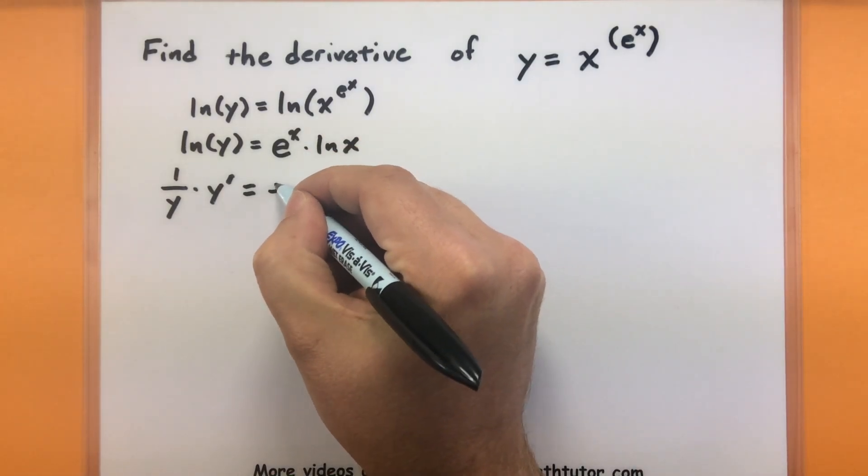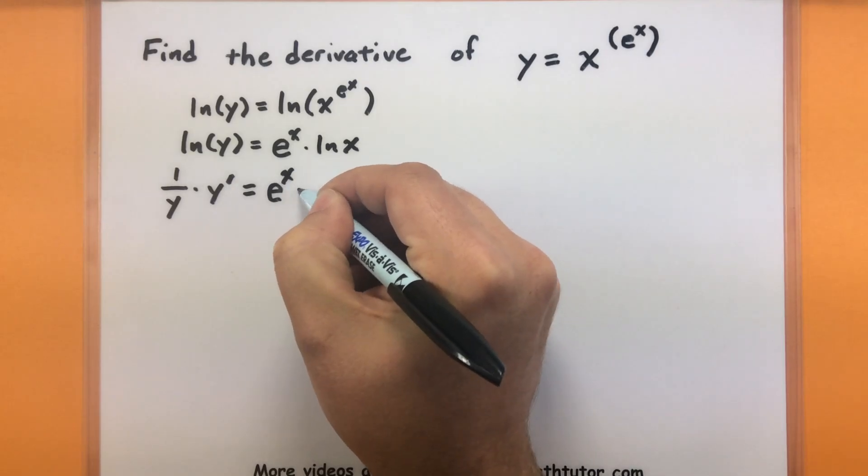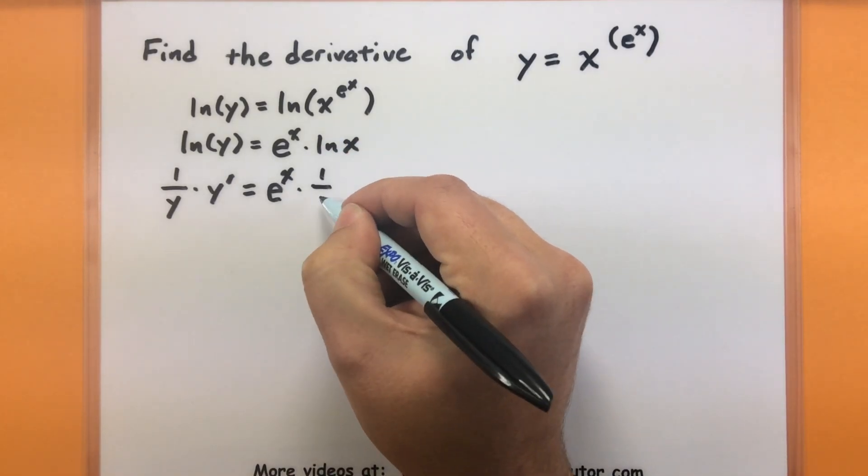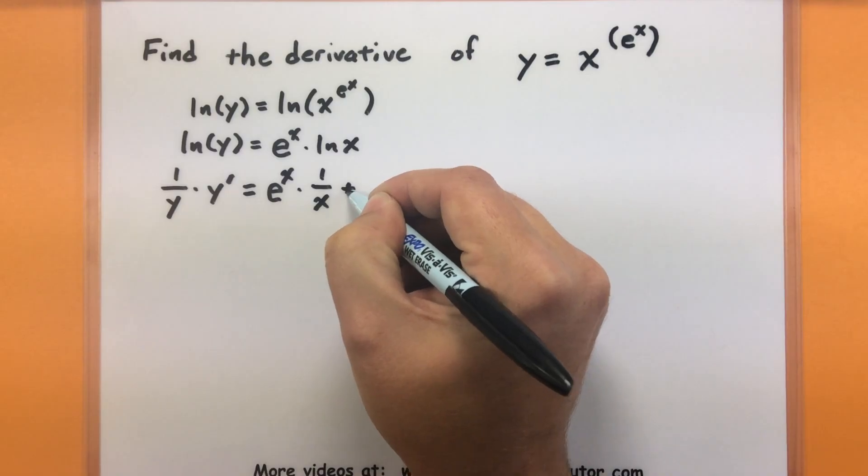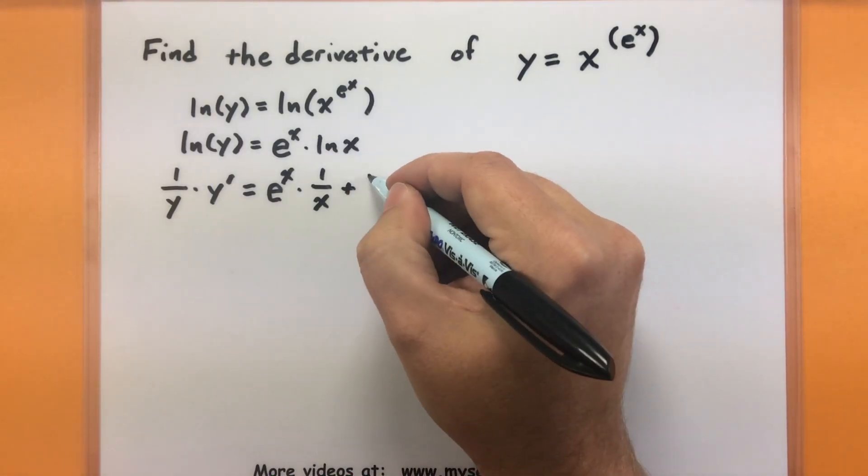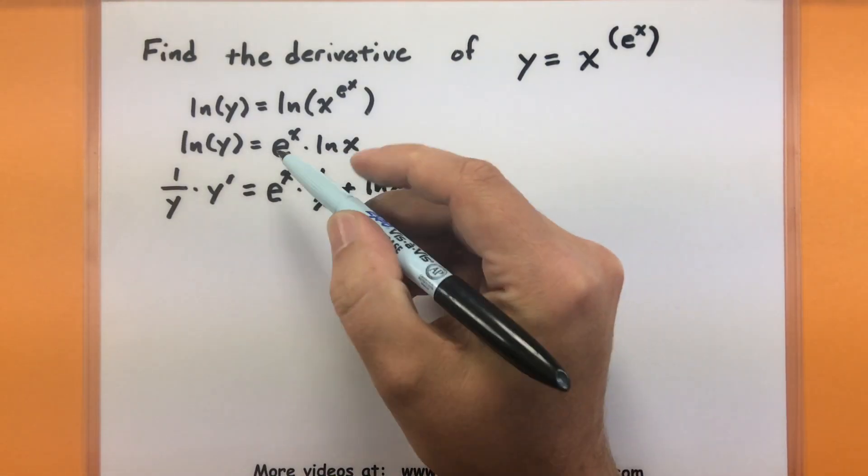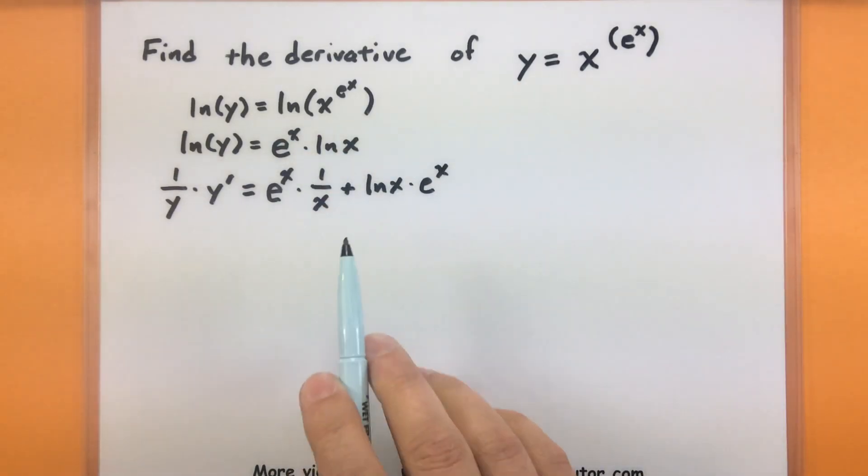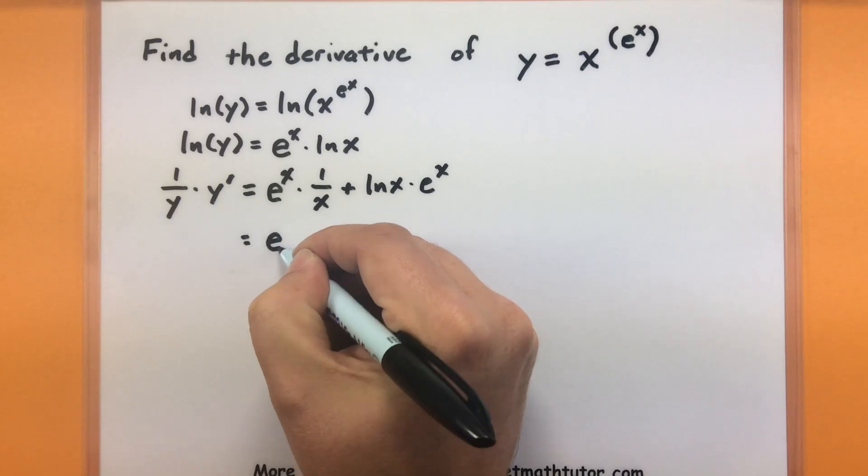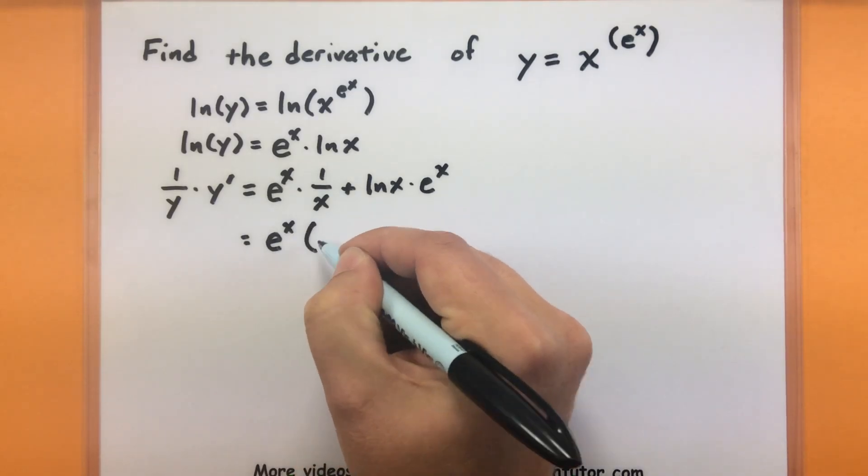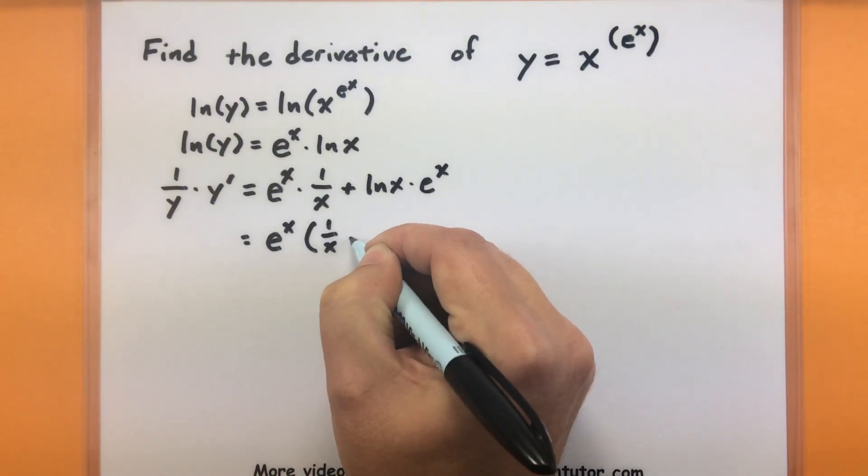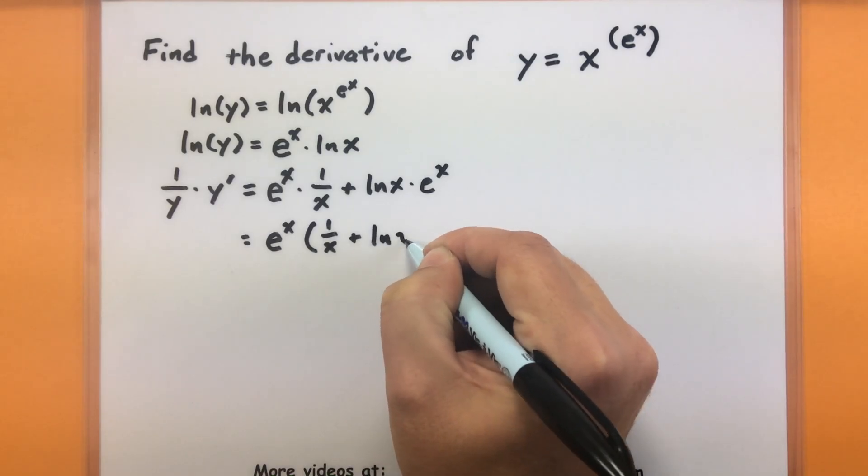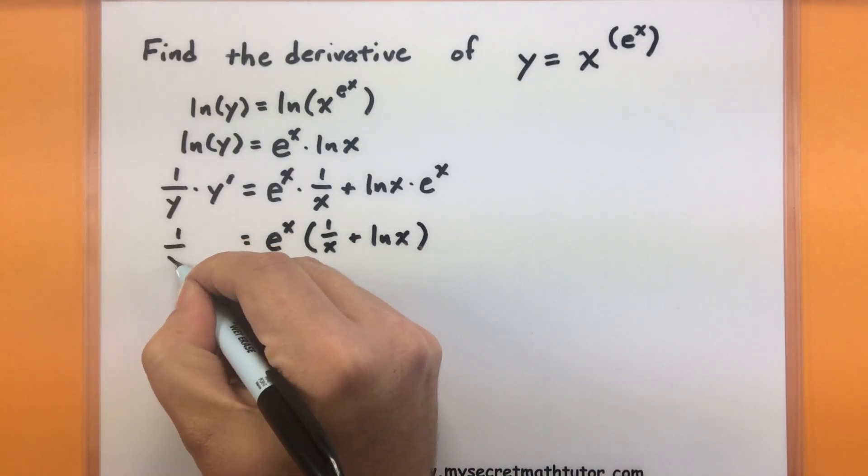So I have the first function just as it is, multiplied by the derivative of the second function, that's our 1 over x, plus, now I have my second function, natural log of x, multiplied by the derivative of the first, so e to the x. So product rule, derivatives of e to the x, derivative of natural log, all that's working in there. And I might just take just one more step to go ahead and factor out that e to the x. I guess it's not entirely necessary, but it will make things look a little bit cleaner. So things are looking pretty good.